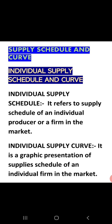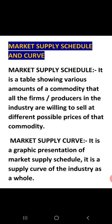Individual supply schedule is a tabular presentation of supply by the producers. When you present data in the form of a table, that is the supply schedule. Individual supply curve is when you take that same tabular data and present it graphically — that becomes the individual supply curve. Similarly, market supply schedule is a table showing various amounts of a commodity that all the firms in the market are willing to sell at different possible prices.